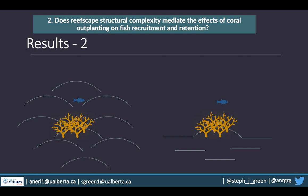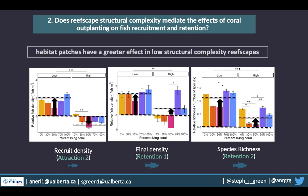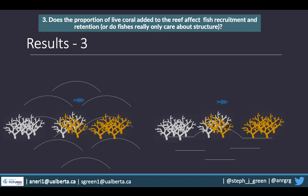To address our second question — does reefscape structural complexity mediate the effects of coral outplanting on fish recruitment and retention? — on the x-axis we have percent living coral across low- and high-complexity reef treatments, and on the y-axis our response metrics. What was really interesting is that habitat patches had a greater effect in low-structural areas. Adding coral, whether 100% live, a mixture, or even just adding structure, was more impactful on the reef flat than in areas of high complexity.